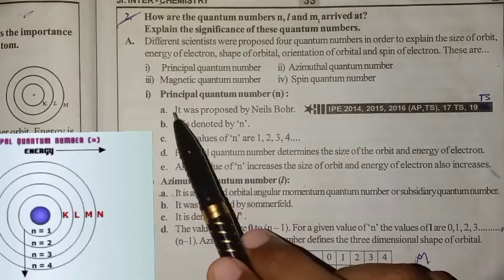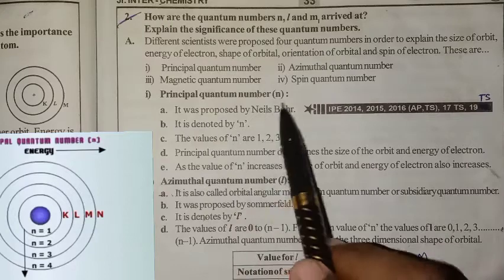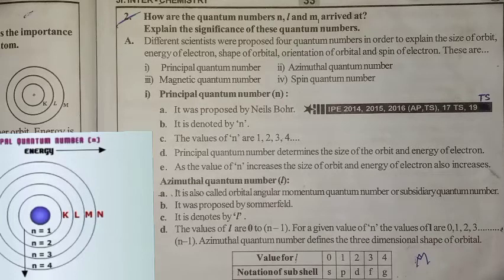First point: the principal quantum number. It was proposed by Niels Bohr. The principal quantum number is denoted by N. The values of N are 1, 2, 3, 4 and so on.